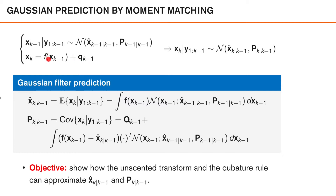We then have the expected value of f(x_{k-1}), which we can write as an integral, since x_{k-1} is distributed according to this Gaussian density. This is precisely the type of integral that we can approximate using our sigma point method. Similarly, we need to compute the predicted covariance P k|k-1. This is the covariance of x_k given data y_1 to k-1, and we can decompose it into two terms: one term from the noise q_{k-1} with covariance Q_{k-1}, and one term relating our uncertainty in f(x_{k-1}). The covariance of f(x_{k-1}) is another expected value — the integral of f(x_{k-1}) minus the predicted mean, times the same transposed, times the Gaussian density of x_{k-1}. This is again exactly the type of expected value we learn to solve using our sigma point methods.